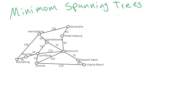That's the goal of Prim's algorithm. We pick one of the cities to be the starting node — it doesn't matter which one. I'll pick Alexandria. We add that to the spanning tree, then keep looping until we can't add any more nodes. At each iteration, we find the edge that connects a new city to the tree with the least cost. Right now we have the 50 and the 135 — the 50 is less, so we add Fredericksburg.